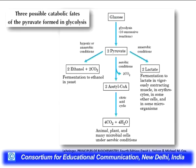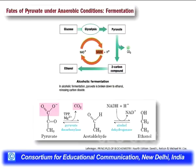In fermentation, pyruvate is converted to ethanol by releasing CO2 under anaerobic conditions in yeast and microorganisms. This is the process used by breweries to generate beer and other alcoholic products, with the resulting ethanol bottled and marketed.